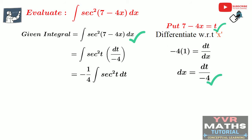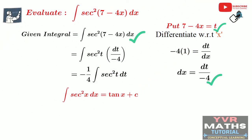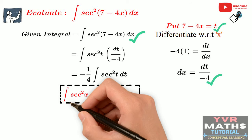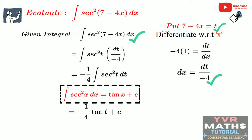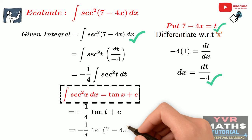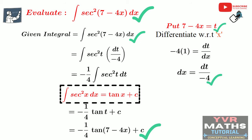If we observe this integral, it is clearly in the standard form. The standard form is integral of sec²x dx. By using this standard integral formula, we get -1 by 4 into tan t plus c. Now replace the new variable by the original variable in the answer. The new variable is t and the original variable function is 7 - 4x. So substituting t = 7 - 4x, the final answer is -1 by 4 into tan(7 - 4x) plus c. This is the final answer for the given integral. I hope you understand.